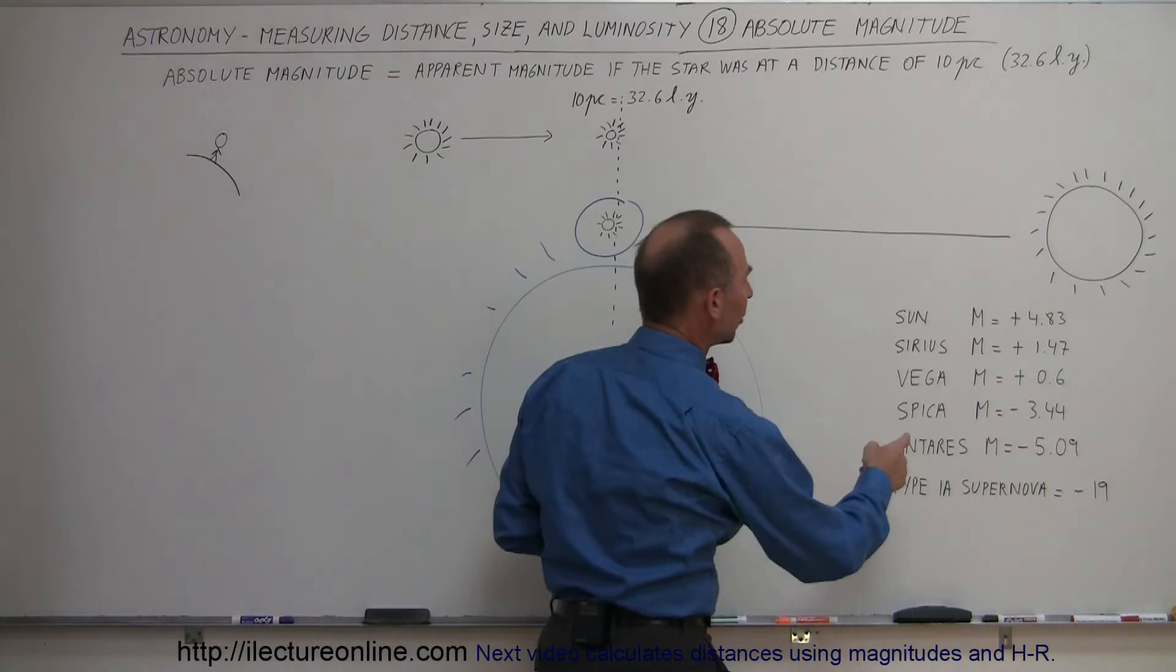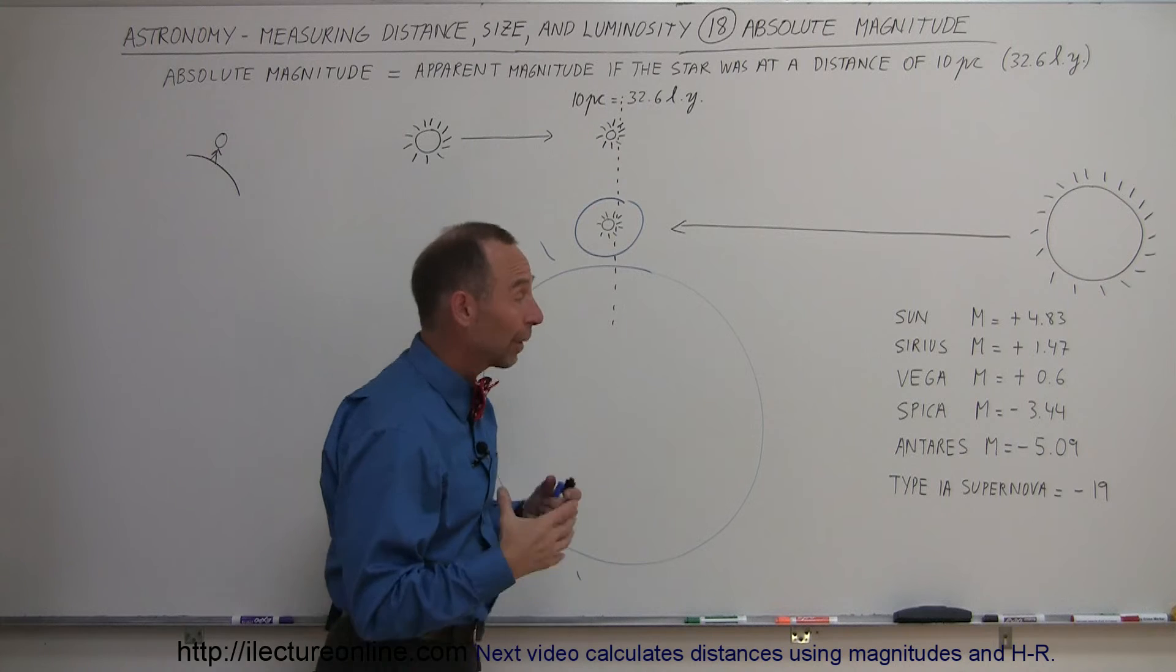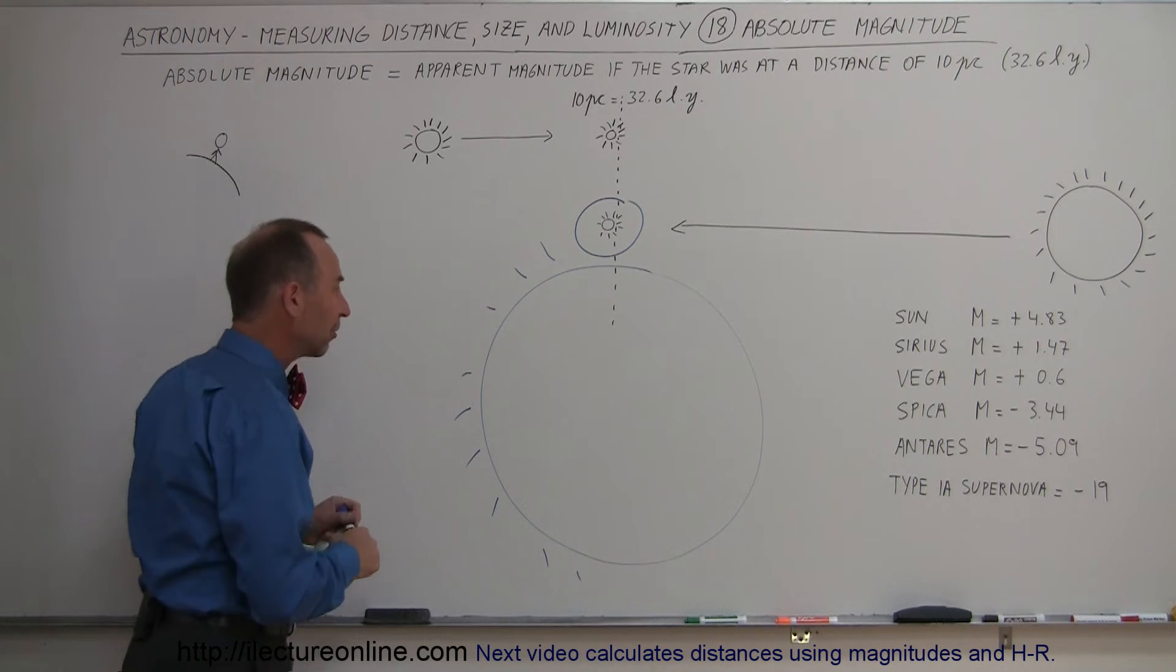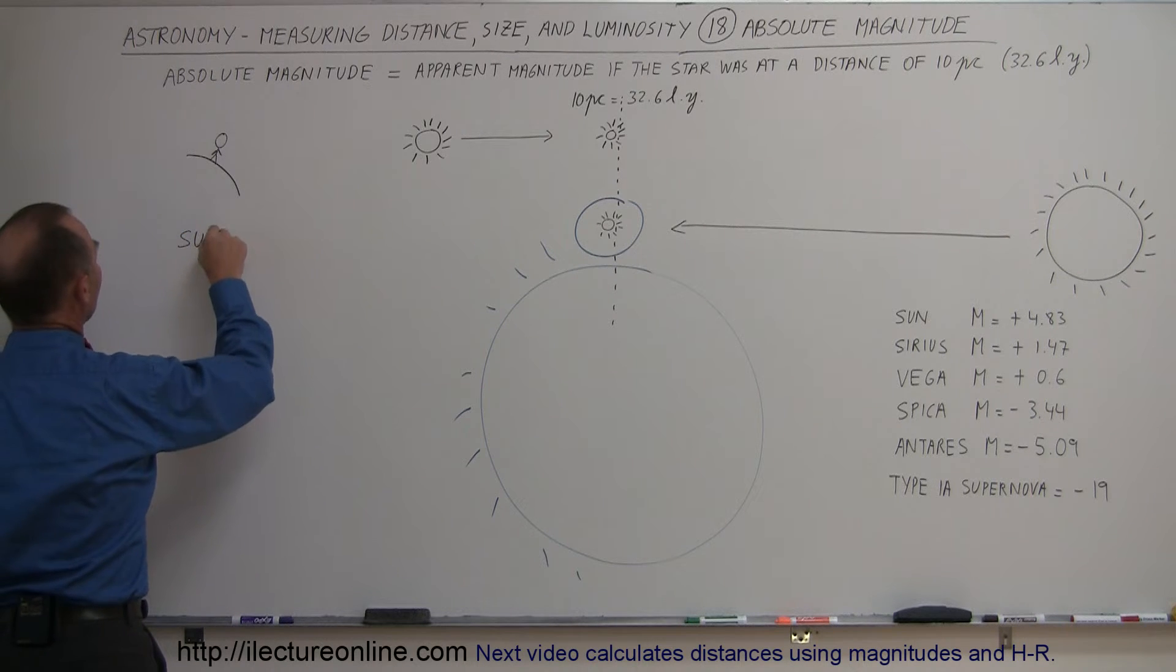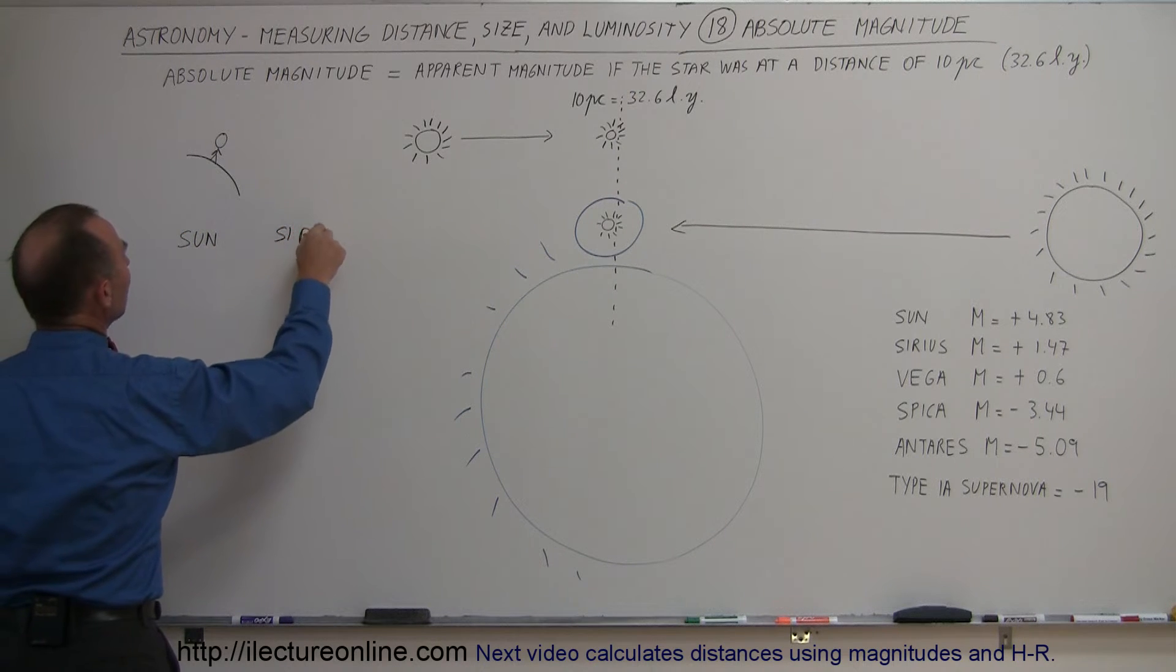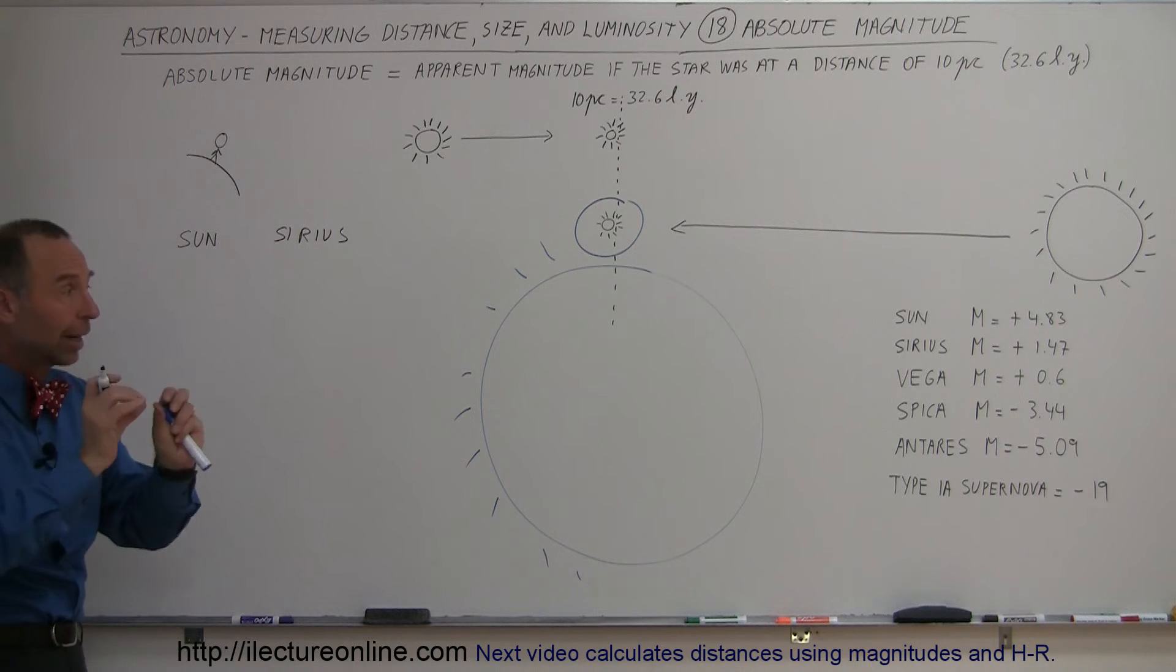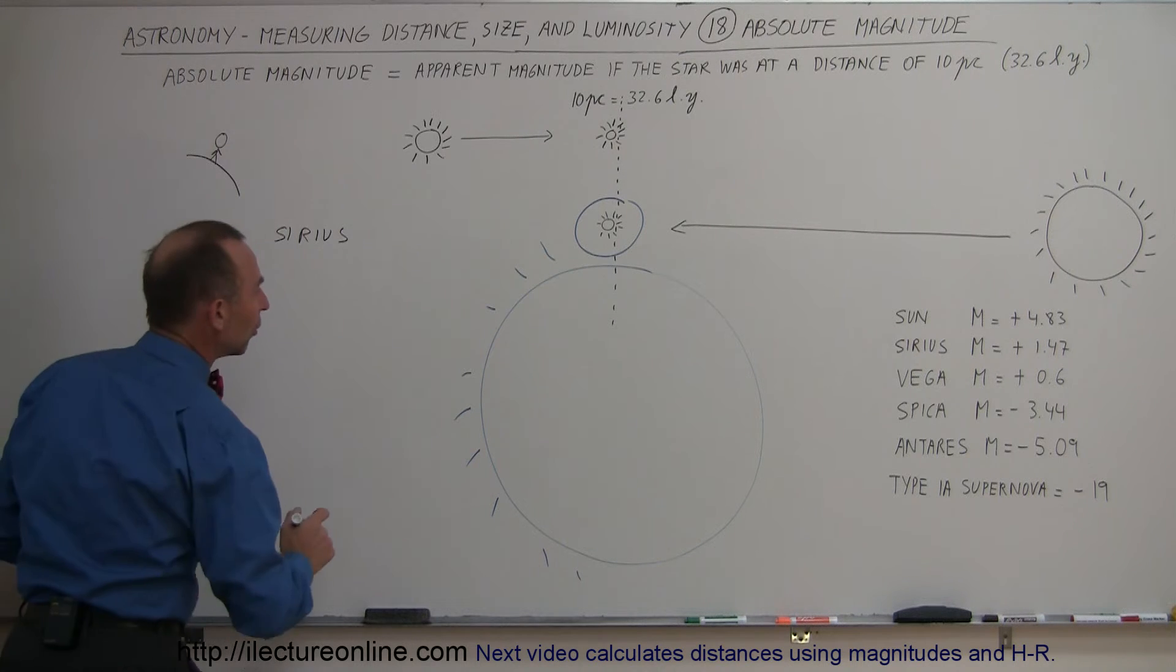And let's also compare, for example, the brightness of the sun to the star Sirius. Sirius is a bright star, the brightest star in the sky that is in the constellation Canis Major. All right, let's first compare the sun to Sirius. And that's the beauty behind what we call the absolute magnitude because then you can actually compare the actual brightness between two stars. Not the way they appear to us, but the way they actually are.